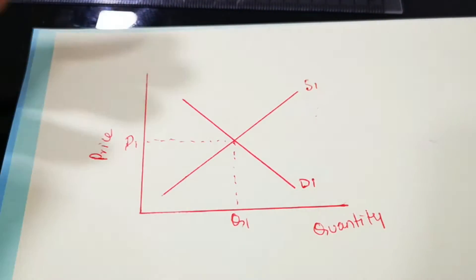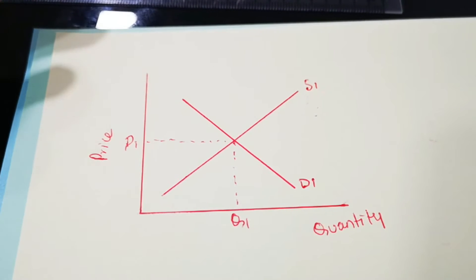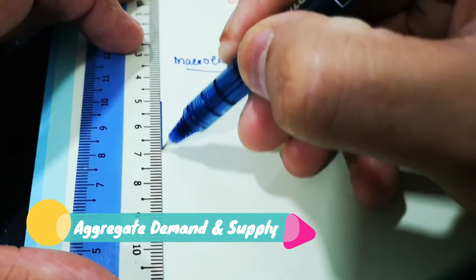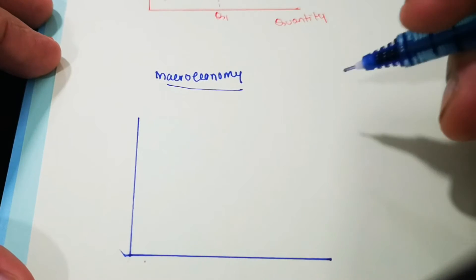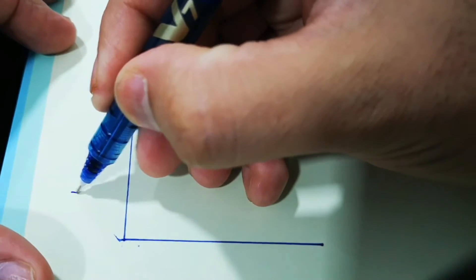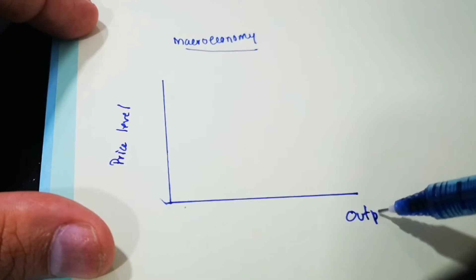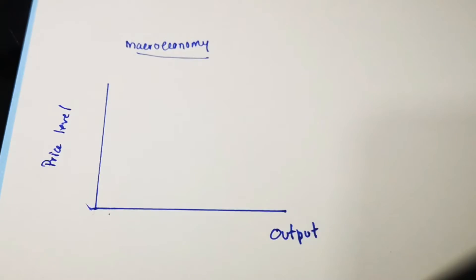Now this is all very familiar. This is the demand and supply diagram in a microeconomic context — demand and supply for an individual product. But now we will learn the demand and supply diagram in macroeconomics. To draw this, you would again draw the y-axis and x-axis. The labeling here will be slightly different: this is going to be price level, as compared to price before, and this would be labeled as output, which signifies the total output in the economy. Price level is the general price level of goods and services in the economy.